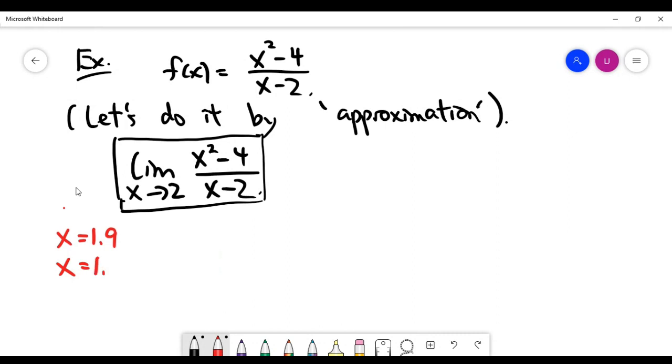After 1.9, I can choose 1.99 as the second point, and I can choose 1.999 for the next point. And now, let's do the calculation.